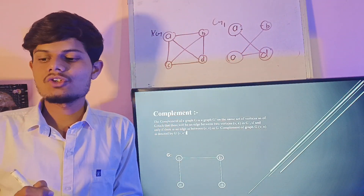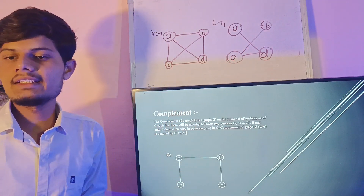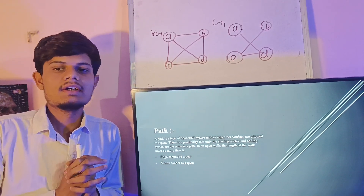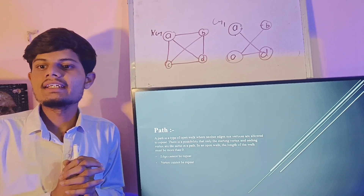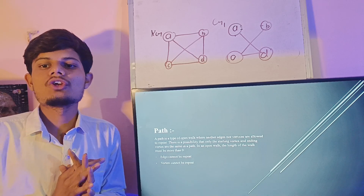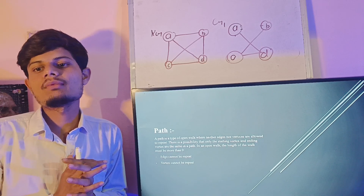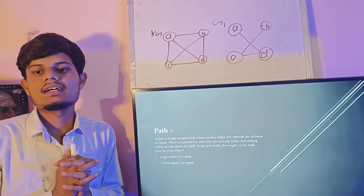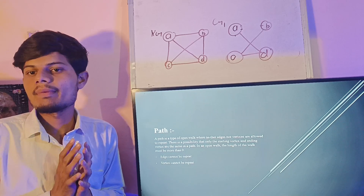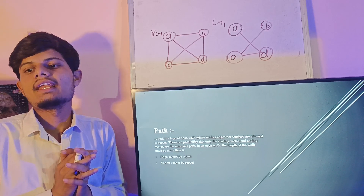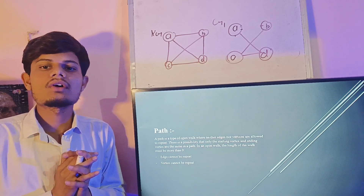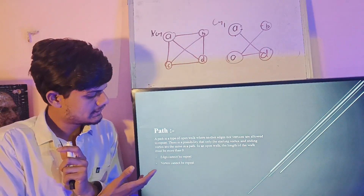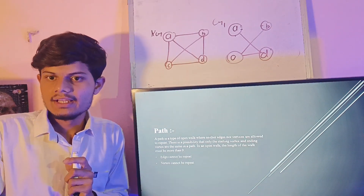Now let's move to our next topic, that is path. A path is a type of open walk where neither edges nor vertices are allowed to repeat. There is a possibility that only the starting vertex and ending vertex are the same. In an open walk, the length of the walk must be more than 0. Edges cannot be repeated and vertices cannot be repeated.